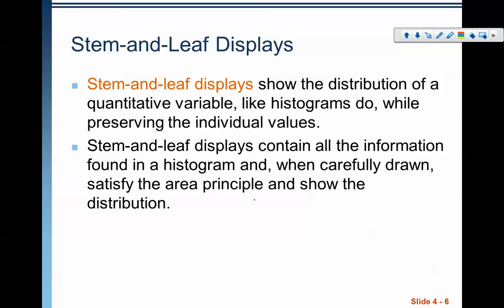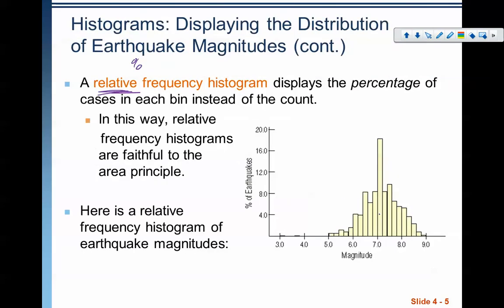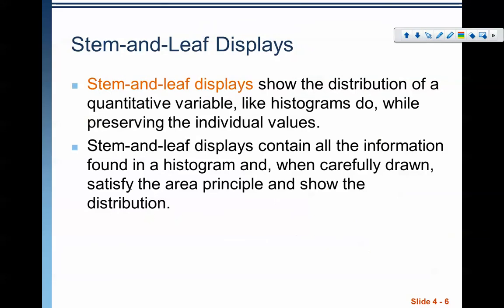We have these things called stem and leaf displays. They show the distribution of a quantitative variable, just like histograms. But they preserve the individual values. So what we mean by that is we don't actually know between 6.0 and 6.2, we don't know how many of which number were in between this area.